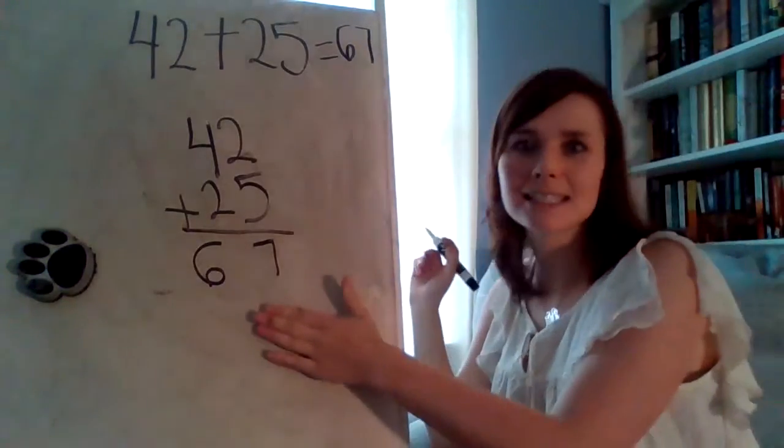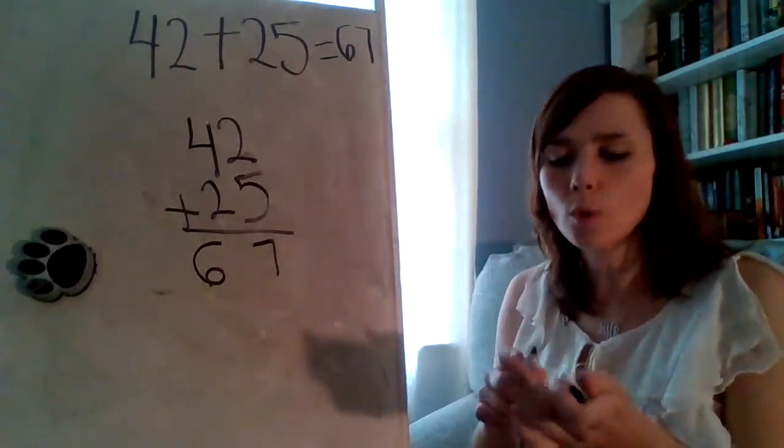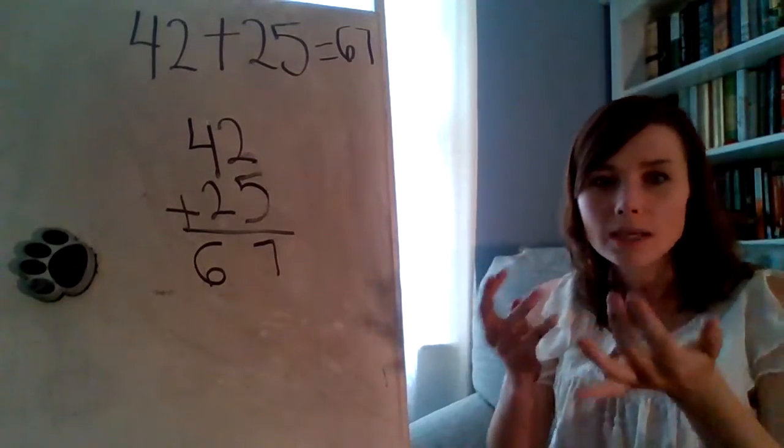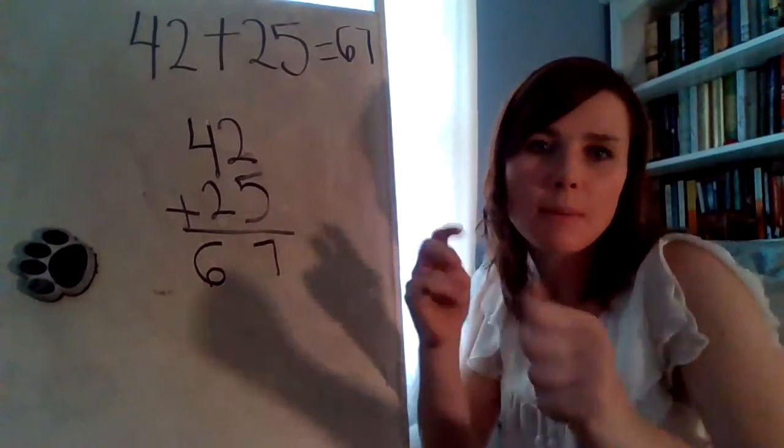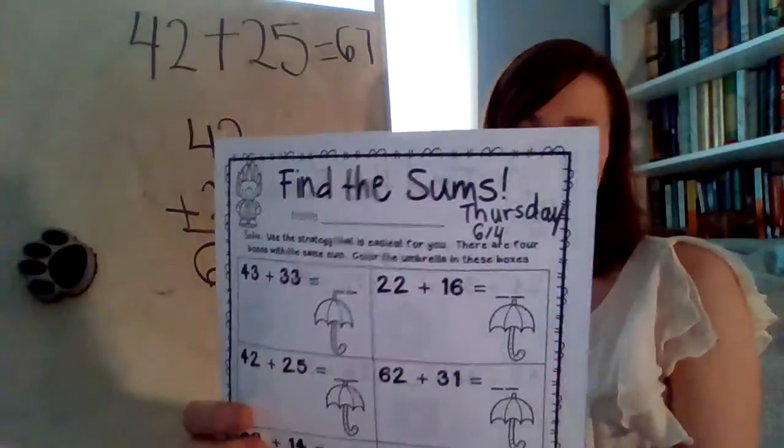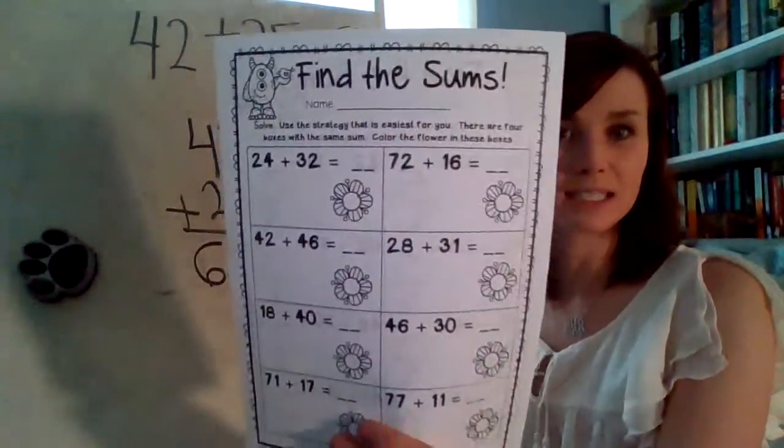So our answer is 67. And that's our stack them strategy. Right? We've learned so many different strategies throughout the school year. We can use quick tens and ones, we can do number bond style, and we can stack them. So any way you would like.